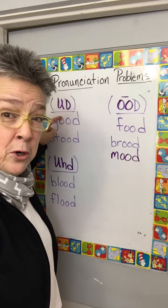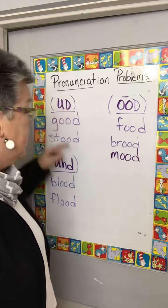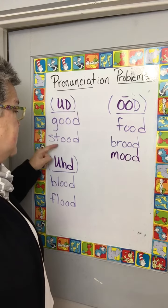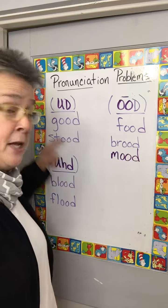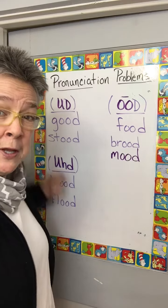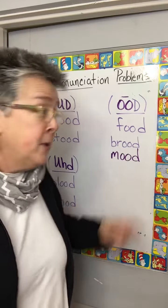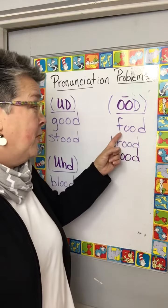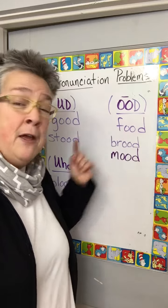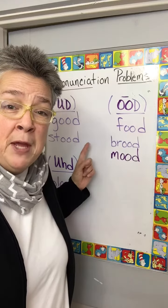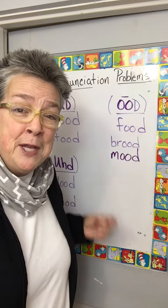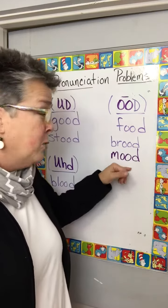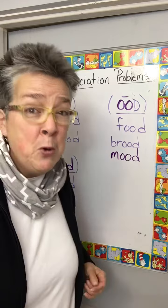The first OOD sound: G-O-O-D, S-T-O-O-D — good and stood. Then we have OOD: F-O-O-D, food; B-R-O-O-D, brood; M-O-O-D, mood.